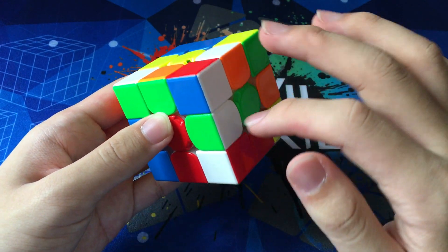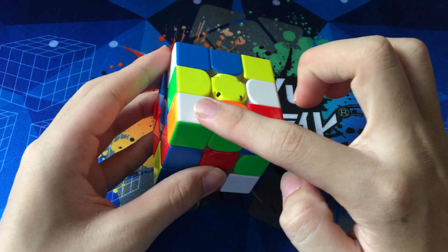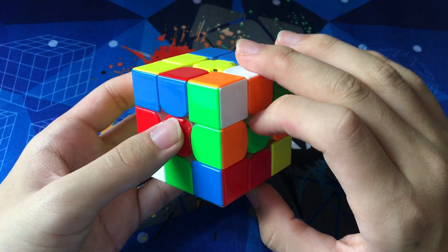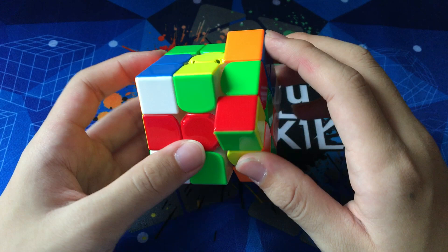And again, instead of inserting these two straight away, he also notices this pattern of these two being a second pair. And instead of inserting this orange edge straight away, he does R U' R. Why is that? Because after he finishes his cross,